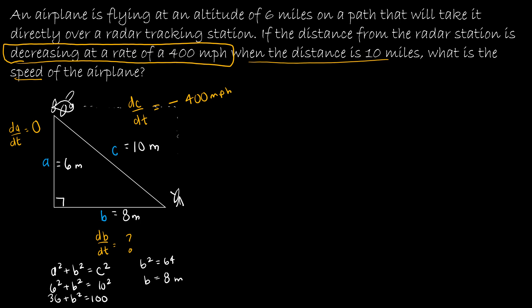I know that A² + B² = C². So 6² + B² = 10². 36 + B² = 100. B² = 64, and B is eight miles. Now I have everything I need to solve this problem. The formula that relates all these values is A² + B² = C². Now I'm going to take the derivative of each side.